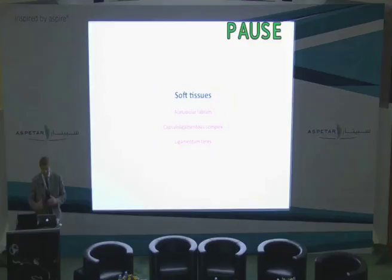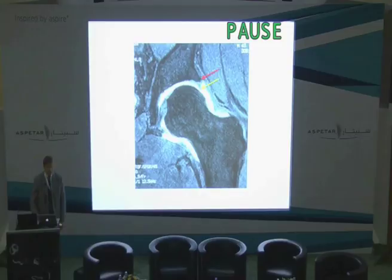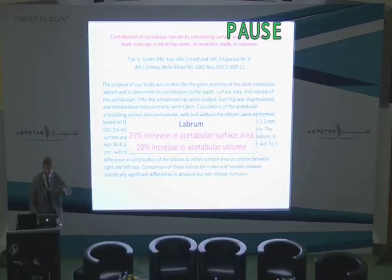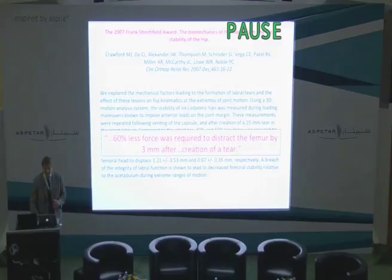Now, if we look at the soft tissue stability of the hip, you've got the acetabular labrum, what I call the capsuloligamentous complex, and the ligamentum teres. The labrum — the red arrow is the bony margin, the yellow arrow is the labrum. We know that the labrum will increase the surface area of the acetabulum by some 25% and increase the acetabular volume by some 20%. The labrum is incredibly important for spreading the load. We look at a torn labrum and we can find, albeit in a CAD study, that 60% less force is required to distract a femur if your labrum is torn.